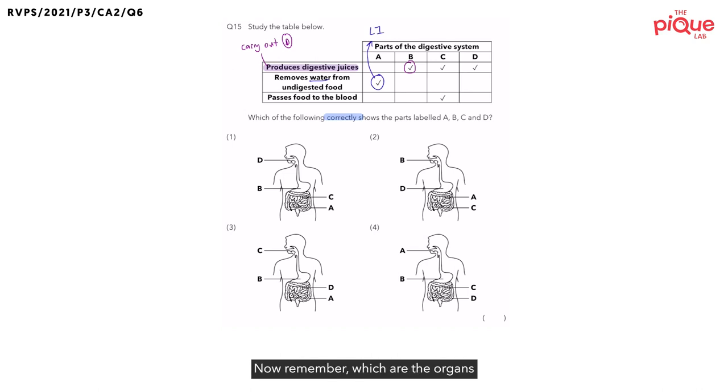Now, remember which are the organs in the digestive system that can carry out digestion? They are the mouth. What else? Stomach and small intestine. But do we know what B is for sure? No.